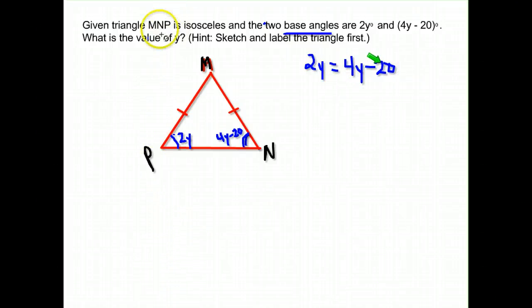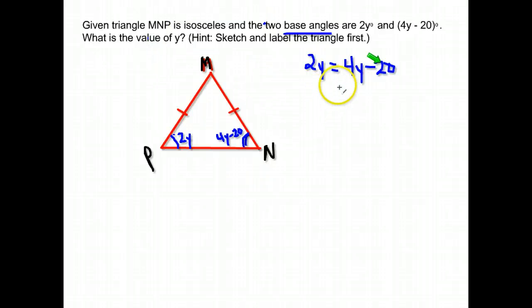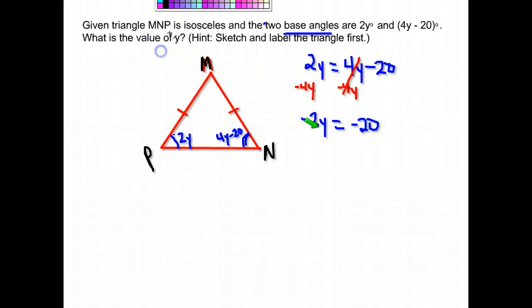We can solve from there. We want to get our y's on the same side—I'll move this 4y. It was positive 4y, so if I subtract 4y from both sides, 2 minus 4 gives negative 2y equals negative 20. Our last step: we have negative 2 times y, so I'm going to divide both sides by negative 2.